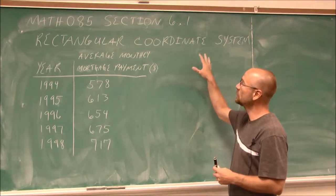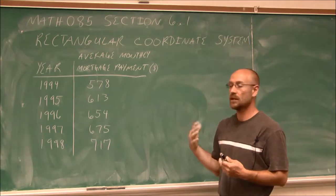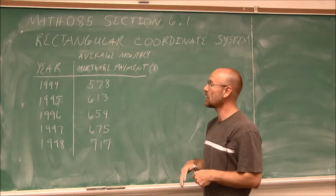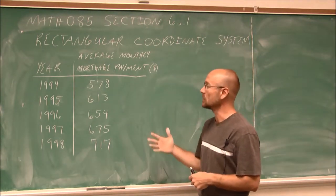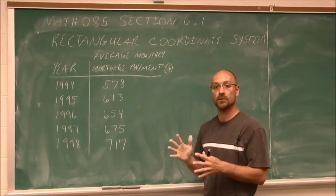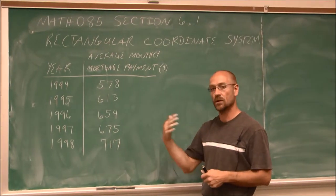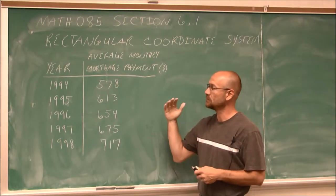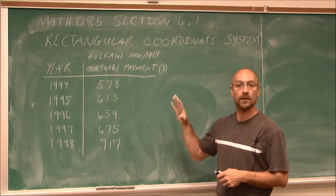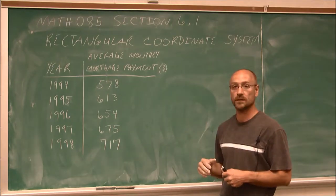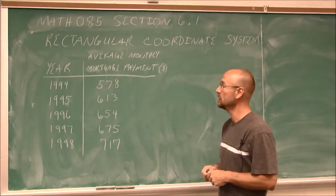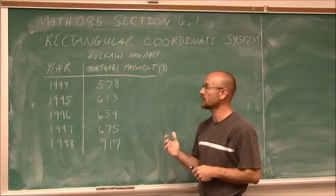So where would we use a rectangular coordinate system? Let's first define some things that we come across in the real world. Maybe we have a set of data and we're comparing two different things. If we recall from section 4.9, we introduced reading graphs. A Cartesian coordinate system is one of the most common graphs that we use, especially in mathematics.